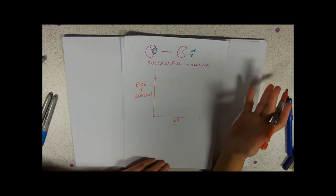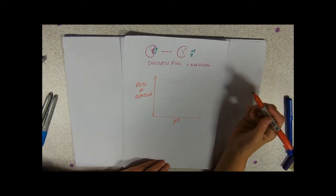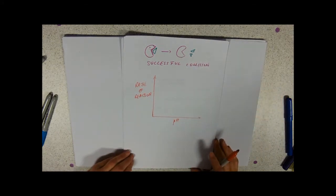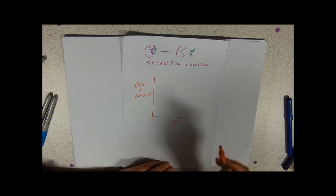Now if you remember in our temperature one, and you can go back and look at that if you need to, it goes a very sort of gentle slope up and then a very plummety one down.